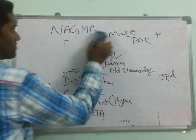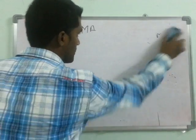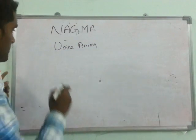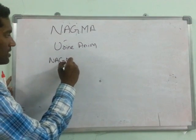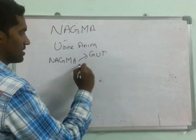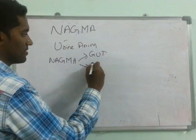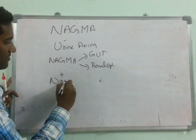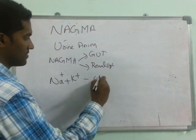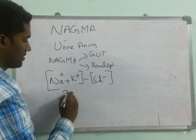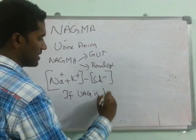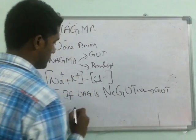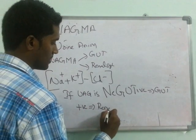Another important concept is urine anion gap. When you have an ABG showing non-anion gap metabolic acidosis, you need to determine whether the cause is from the gut (gastrointestinal tract) or from the renal system. Urine anion gap is calculated as: (Na+ + K+) minus Cl minus. If the urine anion gap is negative, it is a gut cause. If it is positive, it is a renal cause.